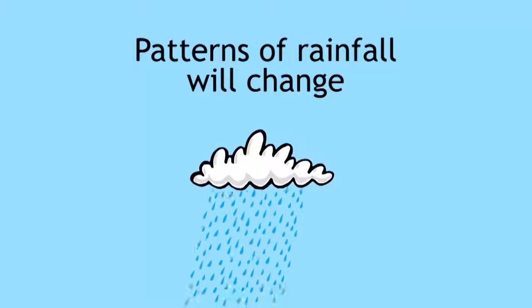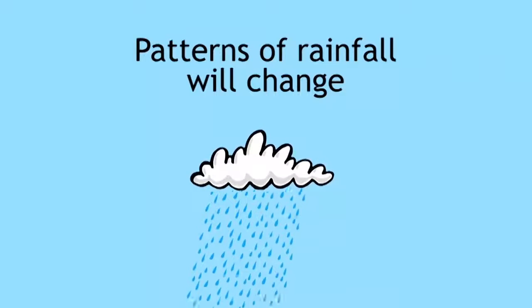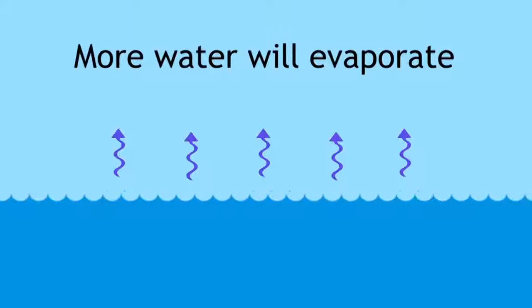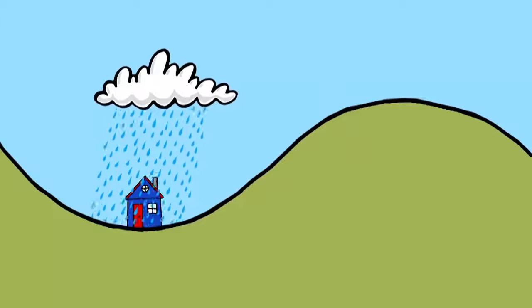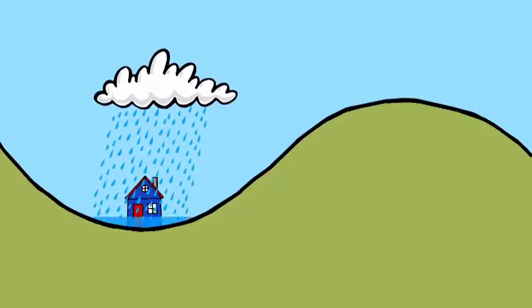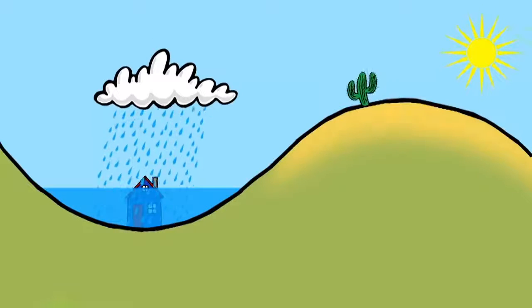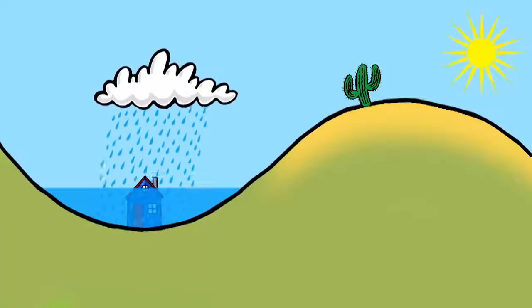Patterns of rainfall will also change. Although a hotter world would have more water evaporated from the seas this water may not rain down as it does at present. Some places will undoubtedly have more rain causing flooding whereas others may have less rain causing droughts.